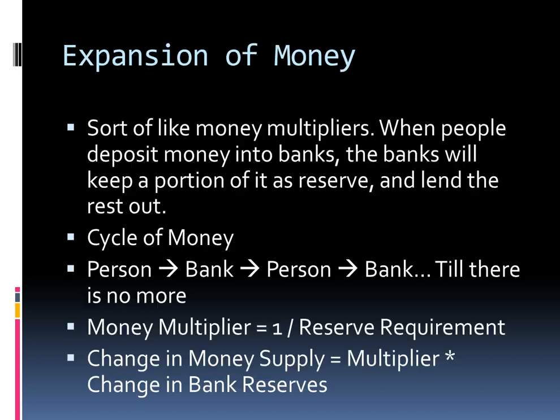Banks can lend out a portion of deposited money, but the depositor still has their money. If I don't withdraw, I have $100 and the bank can lend out $90 to someone else. That person spends the $90, it goes to a shop owner, the shop owner deposits it, and the bank lends a portion again — and extra money is created from my initial deposit. There was only $100, but the bank created another $90, and it keeps going, creating more money until there's nothing left to lend. This is the money multiplier. The money multiplier equals 1 divided by the reserve requirement, and the money supply changes by the multiplier times the change in bank reserves.